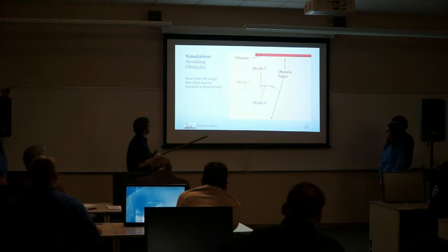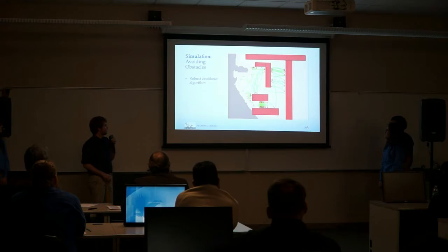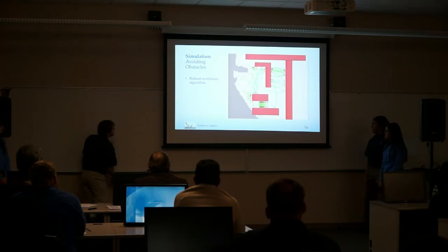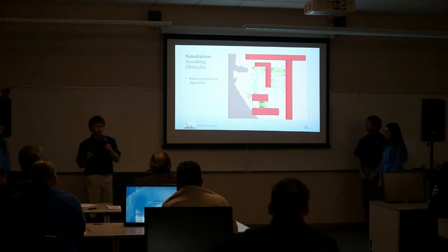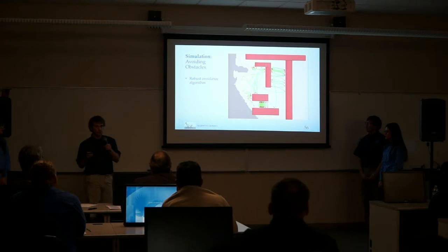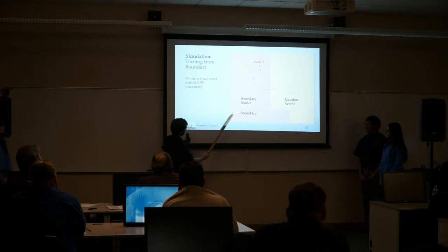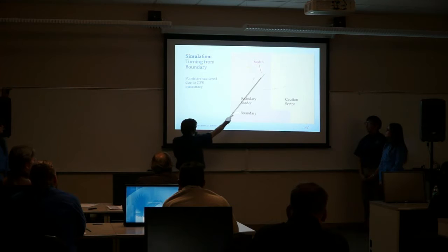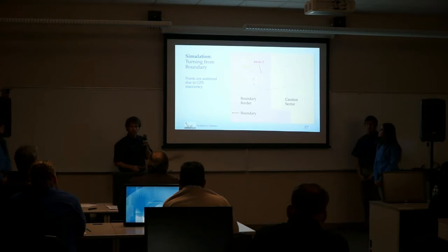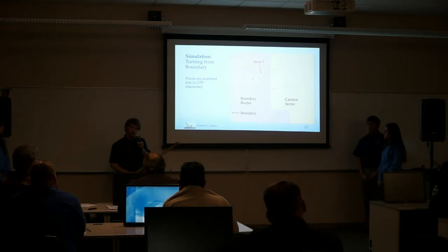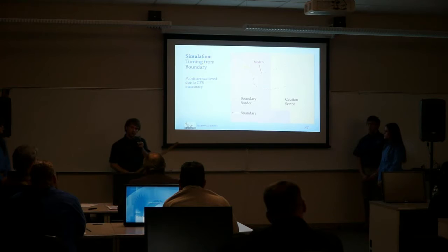This demonstrates the robustness of the algorithm — at no point does it get very close to any obstacle. This next plot shows the robot turning away from the boundary. We have the boundary border in the gray area, and once the robot determines it's in that gray area it switches to Mode 2, determines the best sector to move to, and turns toward it. The rapid mode switching back and forth is due to GPS inaccuracy.